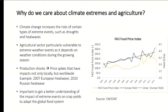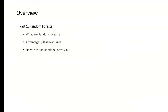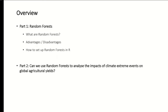So it's important to get a better understanding of how climate and agriculture are interrelated, to prepare the global food system for future climate change and for an increase in extreme events. In my talk today I will first give an overview of random forests — the concept, how they work, their advantages and disadvantages, and how to set up random forests in R. Then in the second part I will go into more detail about how I used random forests in my own research and which findings I found.